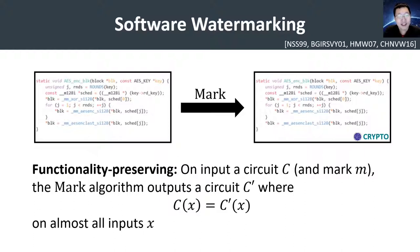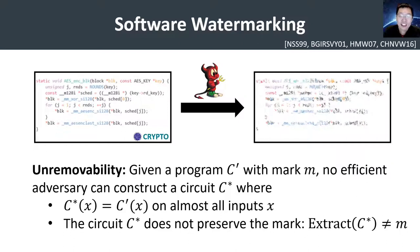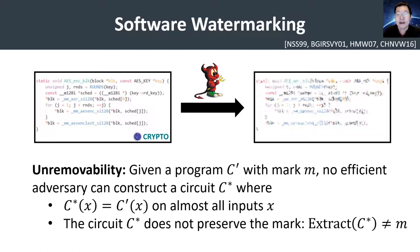The two requirements on a watermarking scheme are: one, functionality preserving, which says the marked version of the circuit and the original circuit behave identically in terms of input-output behavior on almost all inputs. The second requirement is unremovability, a security requirement that says an adversary, given a marked program C prime, will not be able to construct a new program C star such that C star and C prime compute the same functionality on most inputs, and C star does not contain the mark. So essentially, an adversary either has to construct a program very different from the marked program, or it will produce a program that preserves the watermark.